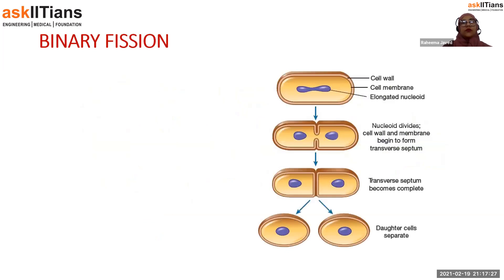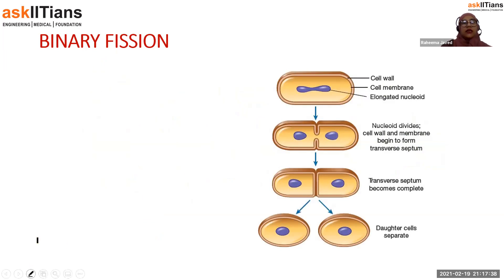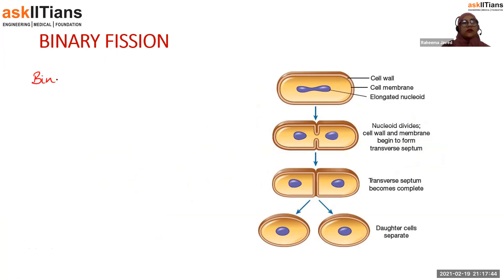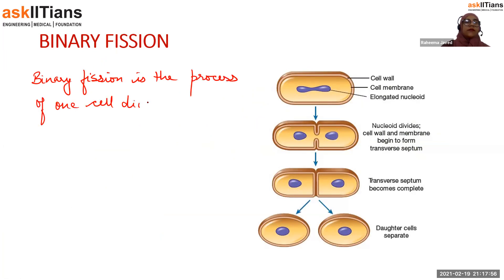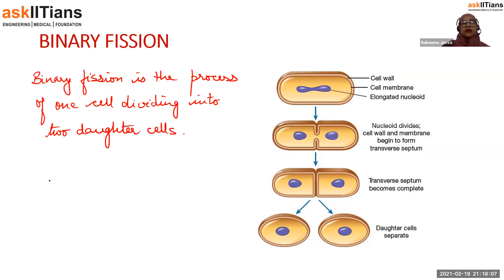The next process is binary fission. Binary fission is the simple process where one cell divides into two daughter cells.